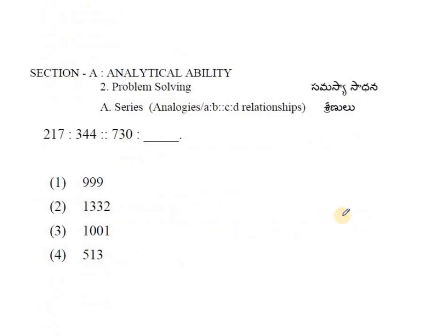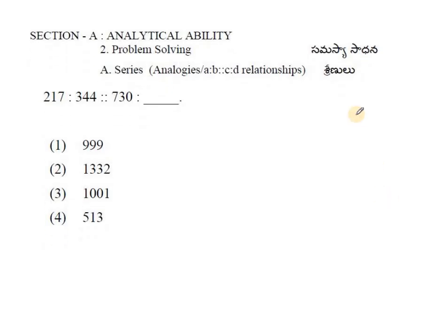Next analytical question: 217 becomes 344, then 730 should become what? Looking at this as continuous numbers 217, 344, 730, we need to find the pattern. This is mostly in squares, cubes, or some multiplications like Fibonacci series.